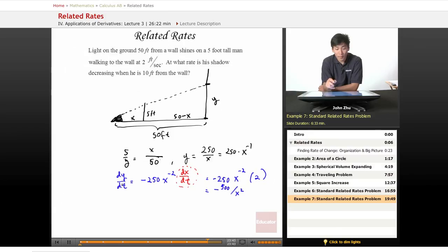Now we have this expression for dy/dt and x squared, and we're looking for the rate at which his shadow is decreasing. So we're looking for dy/dt.